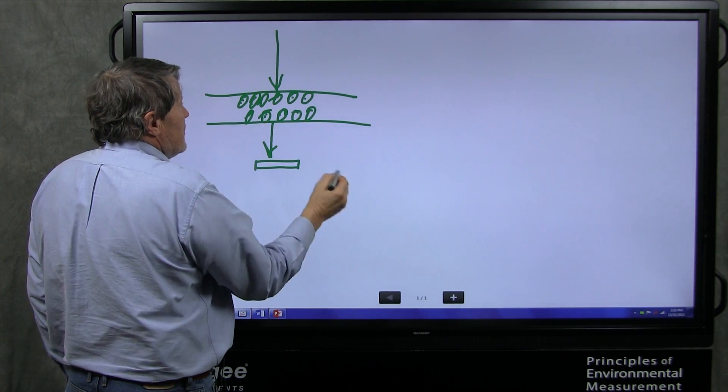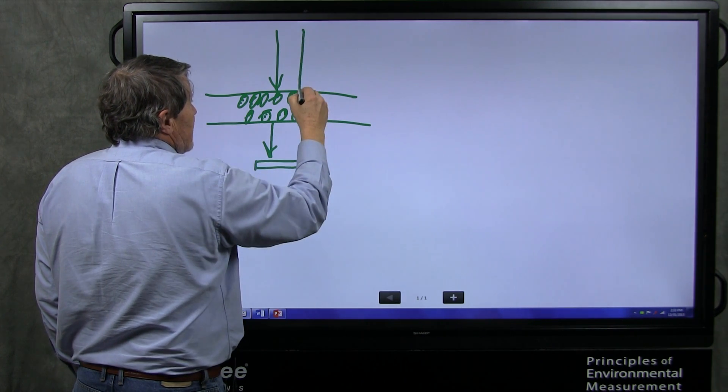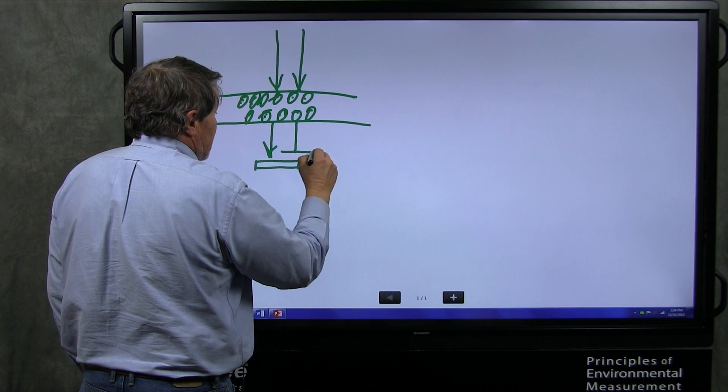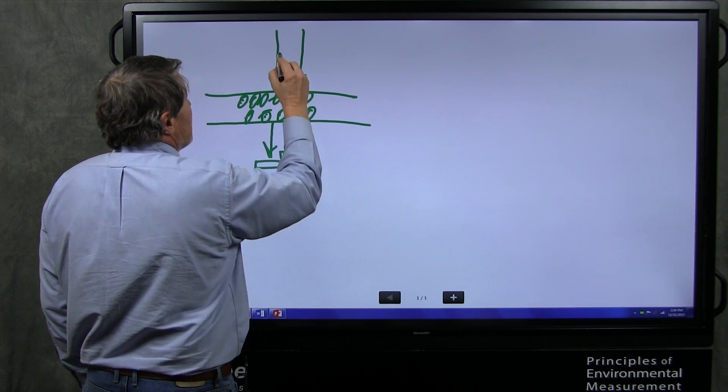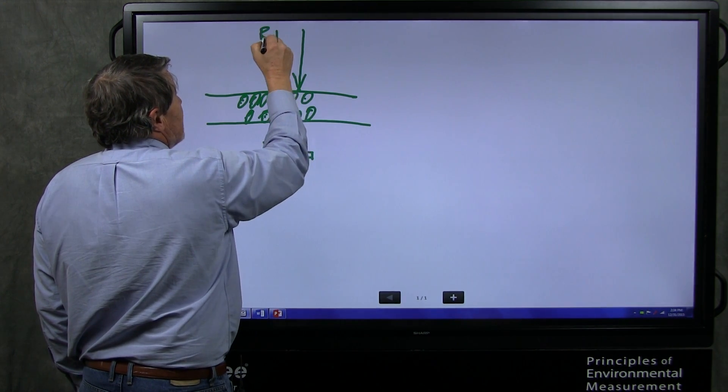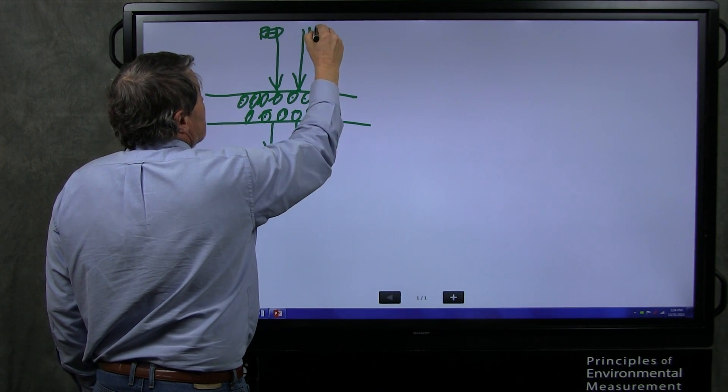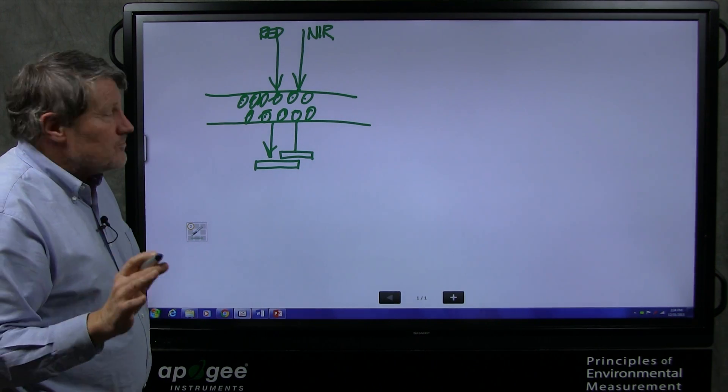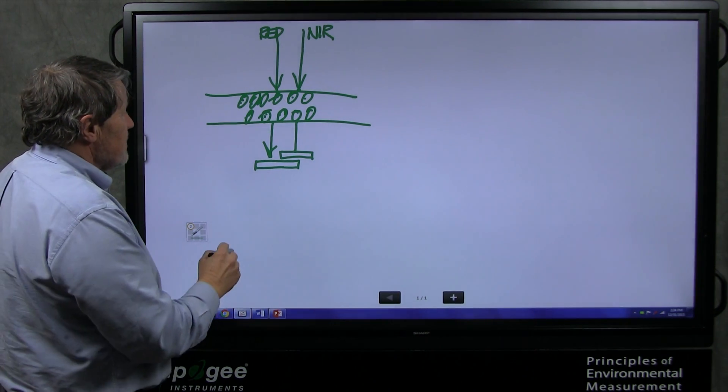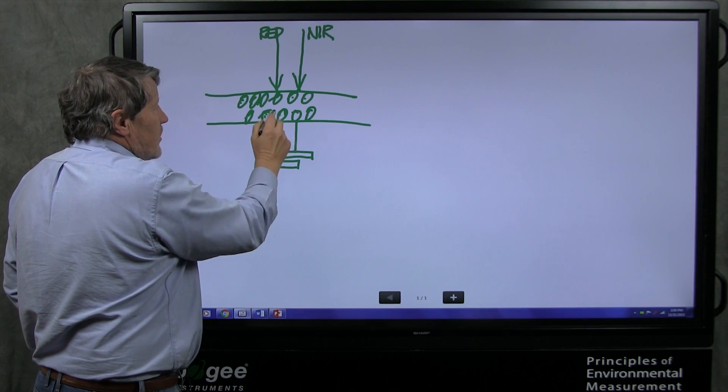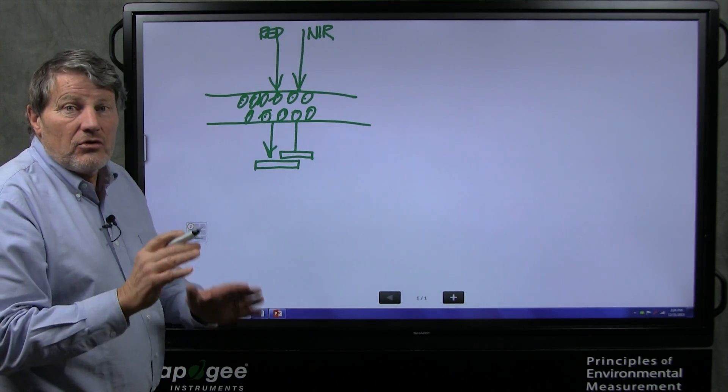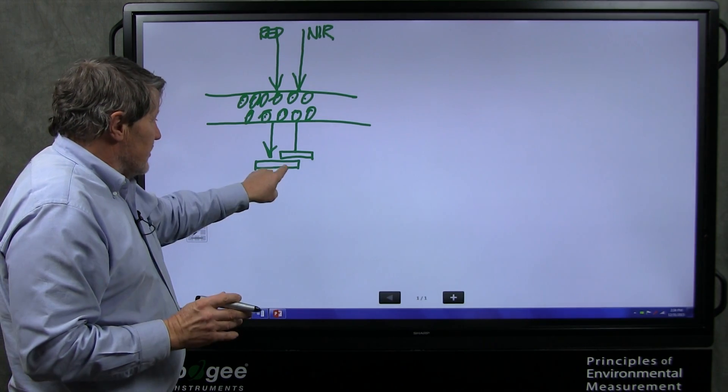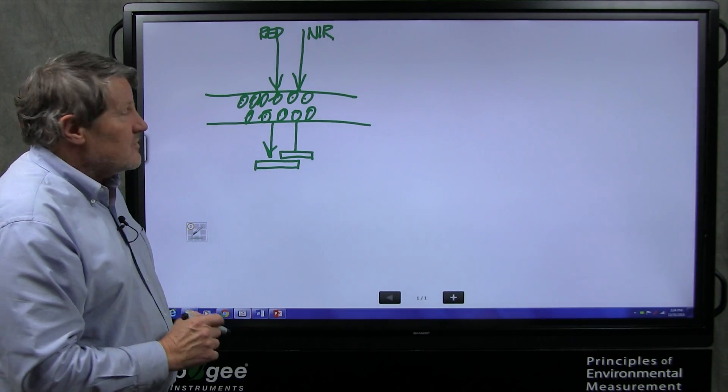So to really be able to measure this, we take another wavelength of light, and another detector down here, and this is red light, and this is near-infrared light, NIR. These are all on the Apogee website, the details of these. And now by subtraction, we can get at the amount of chlorophyll in this leaf. And it's the electrical output of these two detectors.